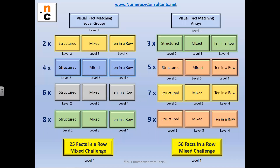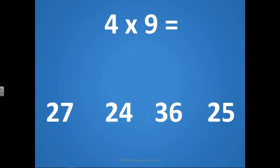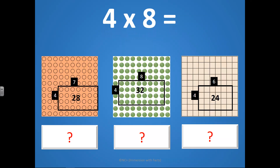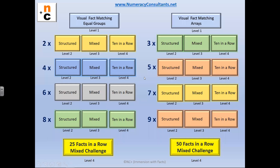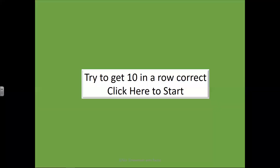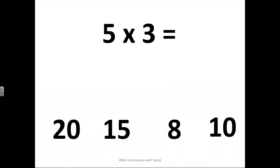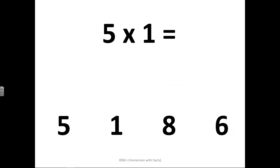Level three is mixed practice, designed to transition students from the easier, predictable, structured problems to mixed. Mixed has no predictable pattern, but still provides supports that are in place for students. Level four is traditional math fact practice — students will have a choice of doing 10 in a row within each family, or a 25 facts in a row mixed challenge, or a 50 facts in a row mixed challenge.